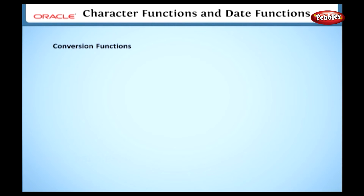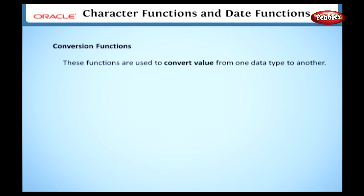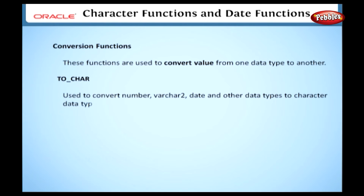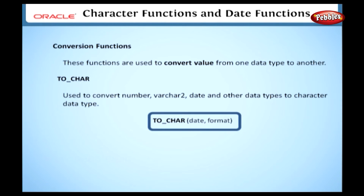The TRIM function is used to trim a leading or trailing character from a character string. In the syntax, you can specify one of three options: LEADING trims the specified character from the left side; TRAILING trims from the right side; and BOTH trims from both sides. For example, trimming the character 'W' from 'wings' from the details table — because no option is specified, it defaults to LEADING and removes the leading character. In this section, we have learned functions for changing string styles and manipulating characters.